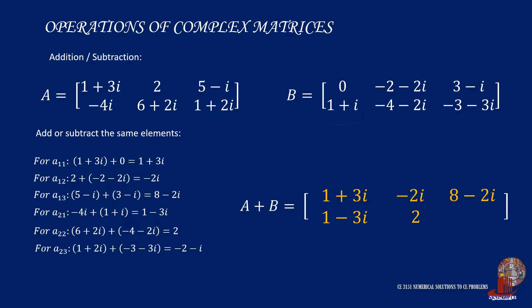The last element 2,3 got 1 plus 2i with negative 3 minus 3i. So we get negative 2 for the real number and 2i plus negative 3i results to negative i.